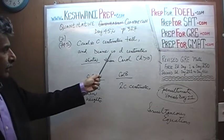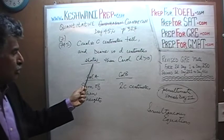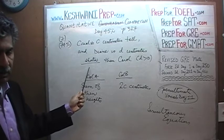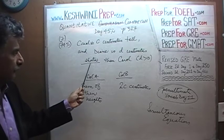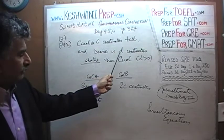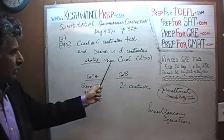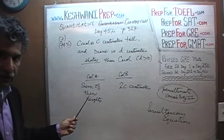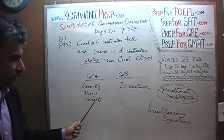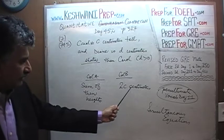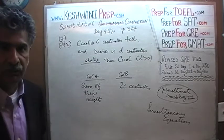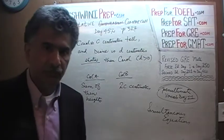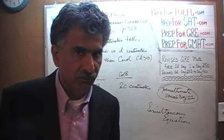We are told that Diane is D centimeters shorter than Carol. This underscoring that you see there is not done by me — this is exactly how it appeared in the exam. What we are being asked to compare are the two quantities: the sum of their heights and 2 times C centimeters. I am going to give you 5 seconds to pause the video, do the problem yourself, and then compare your work against what we will do together.